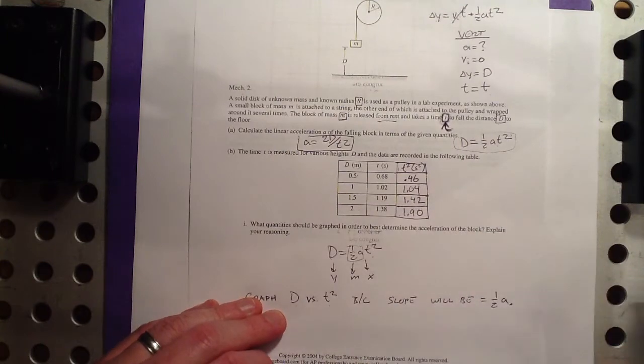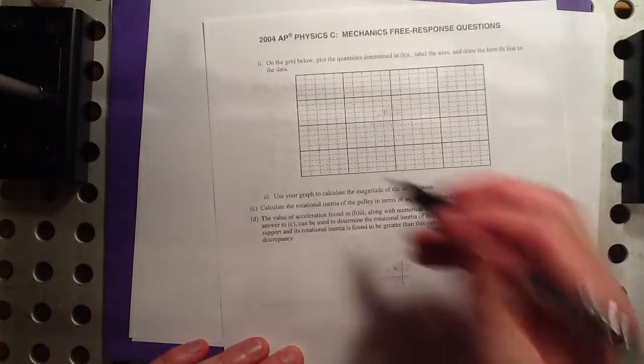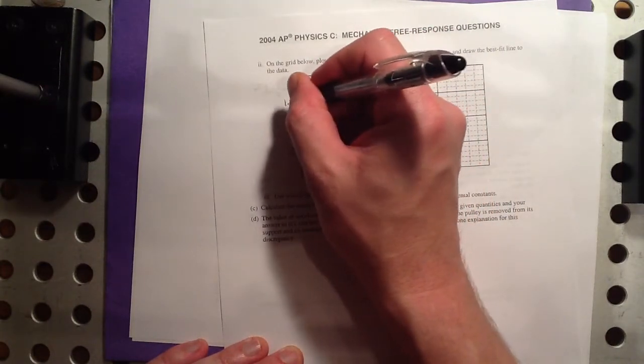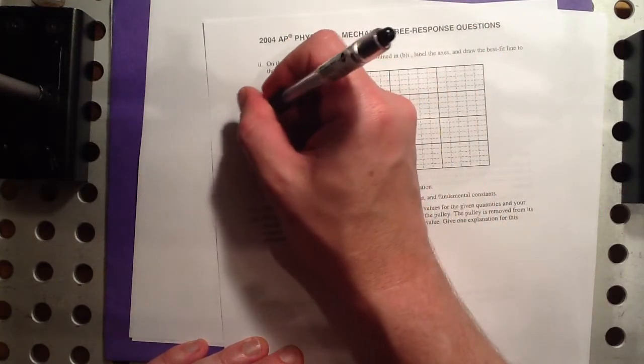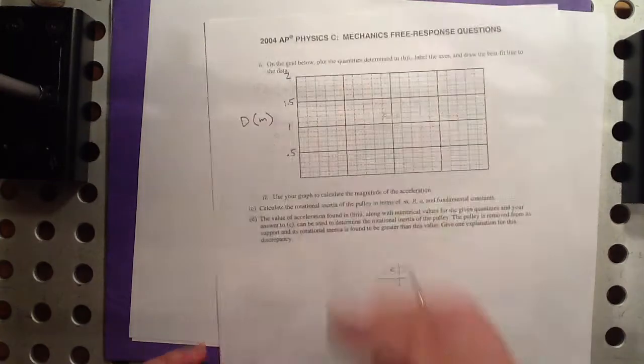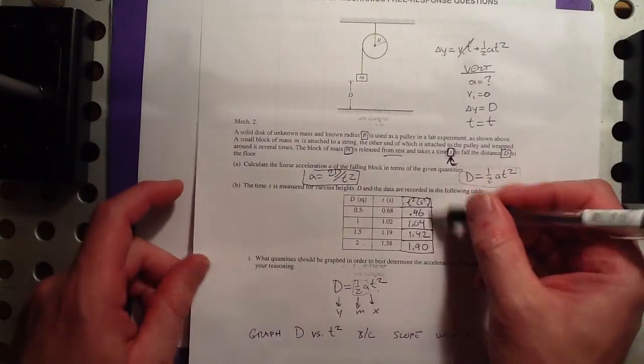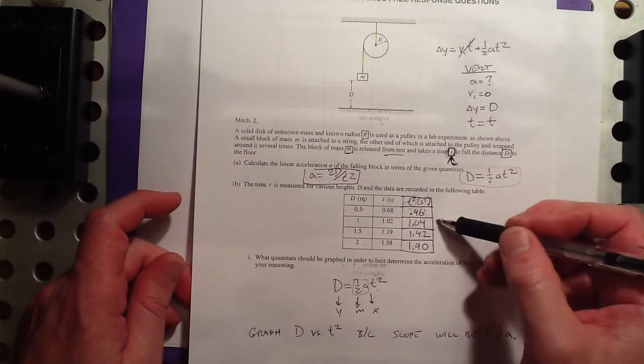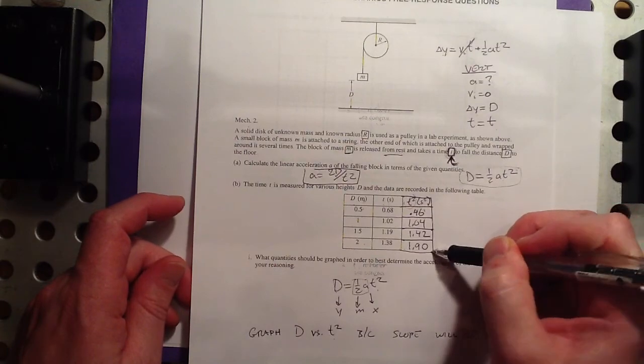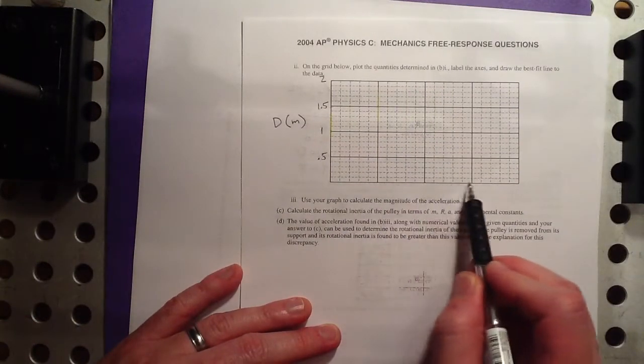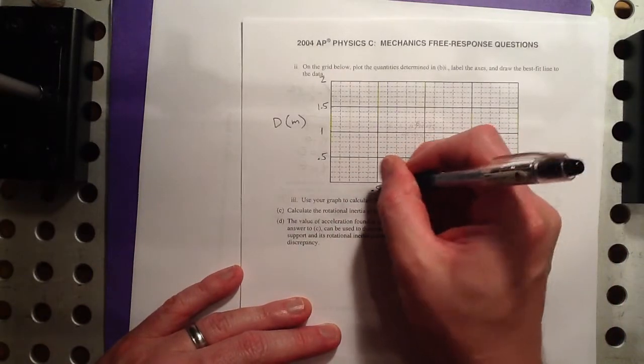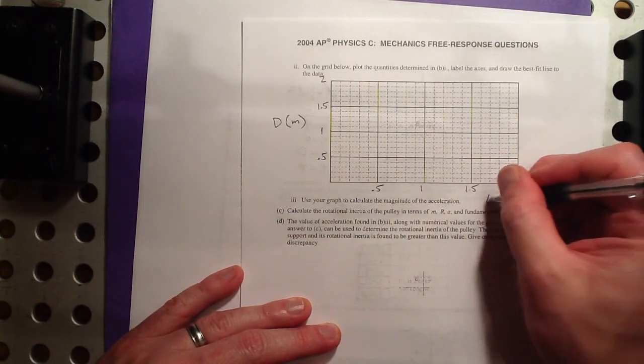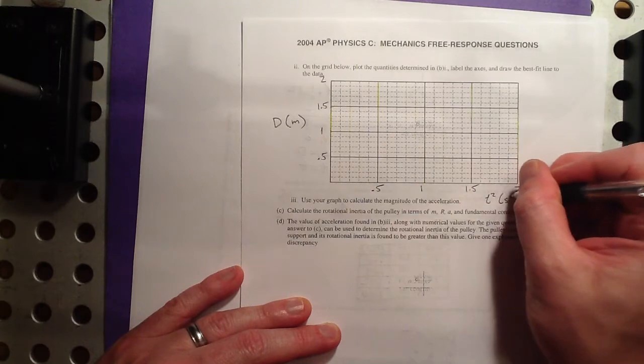0.68 squared is 0.46. 1.02 squared is 1.04. 1.19 squared is 1.42. And 1.38 squared is 1.90. And let's see, on the exam, you have your separate answer booklet. So you'll do it on the graph in the answer booklet here. And I have to remember, let's see, these go up by 0.5s. And that's on my y-axis. So 1, 2, 3, 4. Well, that's perfect. So that's 0.5, 1, 1.5, and 2. This is distance measured in meters. And then, on the other x-axis, or sorry, on the x-axis there, or the T squared axis that we're going to make it, we have maximum value of 2. So 1, 2, 3, 4. So I think the same scaling will work here. 0.5, 1, 1.5, and 2. This is T squared. And the units would be seconds squared.